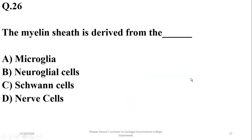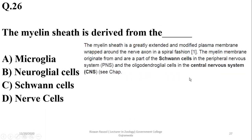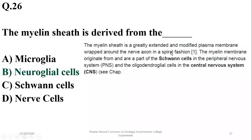Question 26: The myelin sheath is derived from neuroglial cells. It includes Schwann cells in the peripheral nervous system and oligodendrocytes in the central nervous system. So according to me the preferable answer is B — these are neuroglial cells — because the myelin sheath is secreted in both the PNS and CNS.